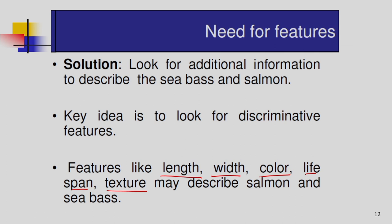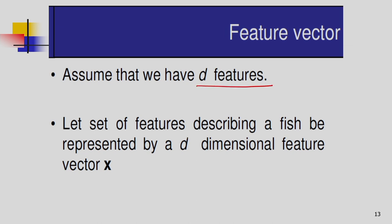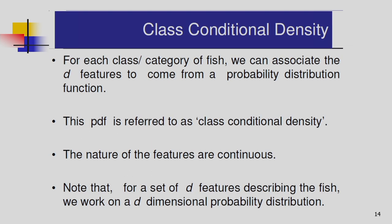We are considering a number of important features, and based on these features we can do the classification. For this, we have d features and we get a d-dimensional feature vector x, which is [x1, x2, ..., xd] transpose. We are considering the continuous features. Now we are considering the class conditional density as additional information, and based on this additional information I have to do the classification.